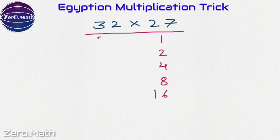Now the next step is to write down this number 32 and keep doubling it. So 32 into 2 is 64, 64 into 2 is 128, 128 into 2 is 256, and 256 into 2 is 512.